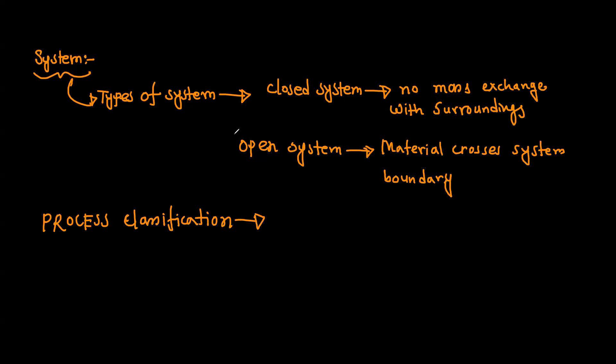For an open system, material crosses the system boundary. We can classify processes into three types: batch process, semi-batch process, and continuous process.